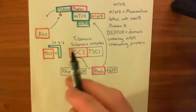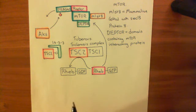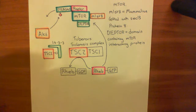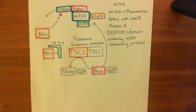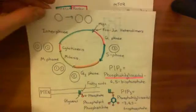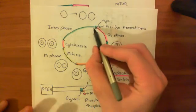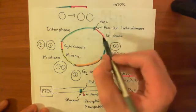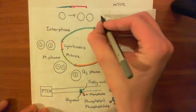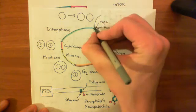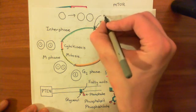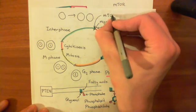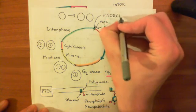This mTOR complex 1 is going to do the same thing as the MYC transcription factors and the CFos and CGEN transcription factors — i.e., it's going to promote you moving from the interphase of the cell cycle to the G1 phase. Here is the mechanistic target of rapamycin complex 1.